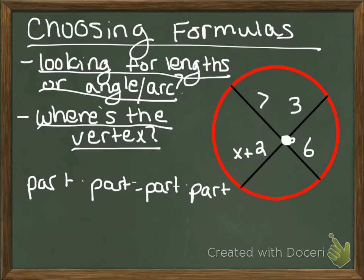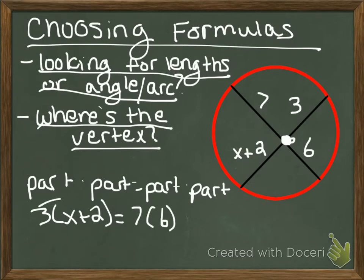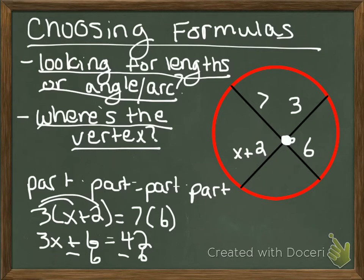Remember that's two parts of one chord multiplied together equals two parts of the other chord multiplied together. So I've got to do 3 times x plus 2 equals 7 times 6. So then I've got to distribute my 3. That gives me 3x plus 6 equals 42. Subtract 6 from both sides.